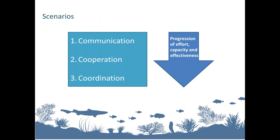The report also explored three different scenarios through which cross-sectoral area-based planning in ABNJ could be implemented, focusing primarily on challenges associated with gaps in governance. From scenario one to scenario three, there is likely a progressively greater level of effort involved, but also potentially greater effectiveness. Further analysis of these scenarios in the context of the presence or absence of a new international legally binding instrument will be developed in the methodology document produced later this year.